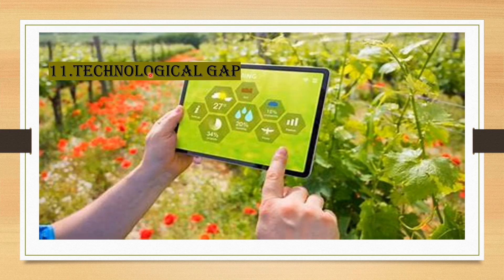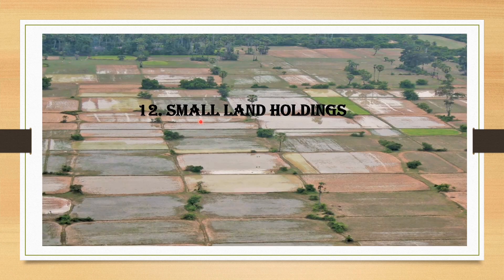The next problem is the technological gap. There is a lot of technology available in the present scenario, and people are aware of it, but farmers — especially small and marginal land-holding farmers in India — lack the ability to fully use this technology. They use it only to a limited extent. If this technology were properly utilized, agriculture would be much more productive, but this gap remains a major problem in present day agriculture.